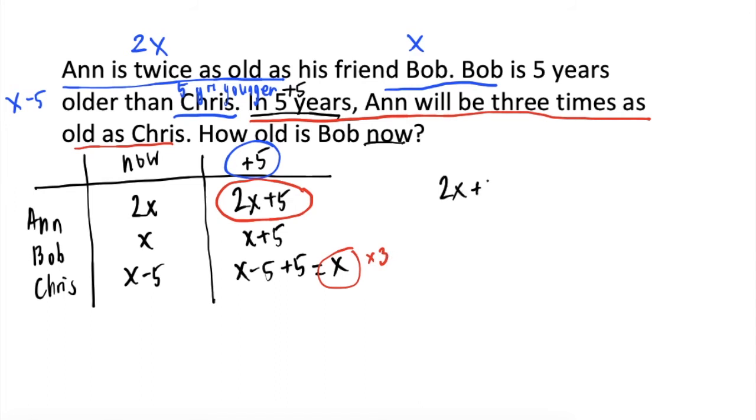Ilipat natin ang 2x sa kabilang side, we will get 5 is equal to 3x minus 2x. 3x minus 2x, that's equal to x. So, we will have 5 is equal to x. So, ang final answer natin is Bob is five years old.